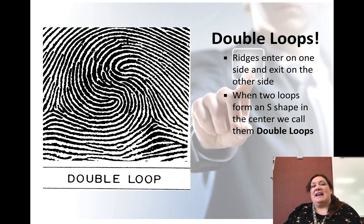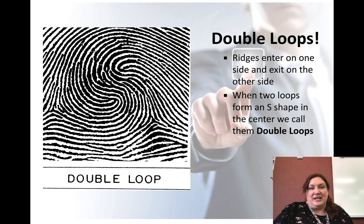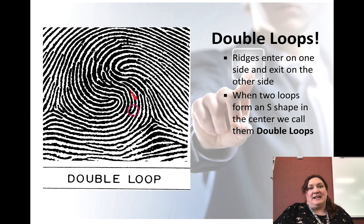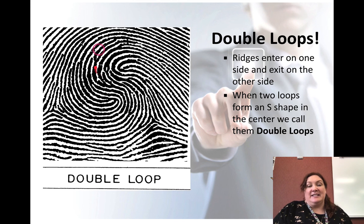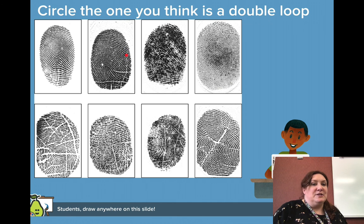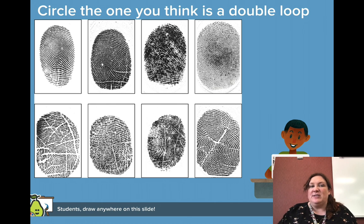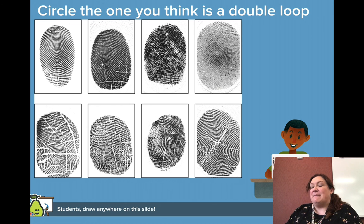Double loops are interesting. The ridges enter on one side and exit on the other side, but the two loops form an S-shape at the center — kind of like a little wiggle dance. That S-shape right in the middle of the print is what makes it a double loop. See if you can find a double loop in any of these prints, or any other loops — a left loop, a central pocket loop, or a right loop. Pause the video if you need to.